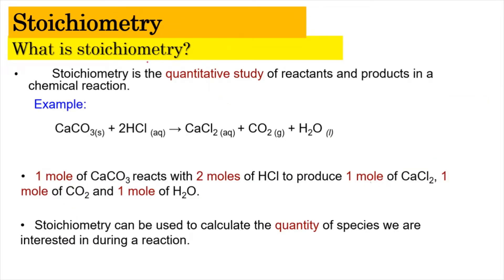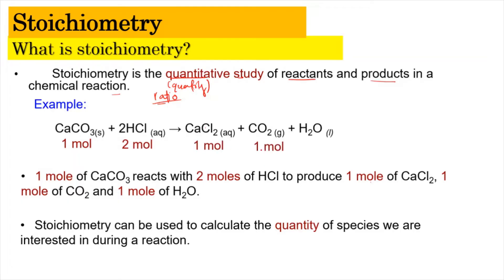So what is stoichiometry? Stoichiometry is a quantitative study of reactants and products in a chemical reaction. We are talking about a ratio. For example, one mole of calcium carbonate reacts with two moles of hydrochloric acid to produce one mole of CaCl2, one mole of carbon dioxide, and one mole of water. Stoichiometry can be used to calculate the quantity of a species we are interested in during the reaction.